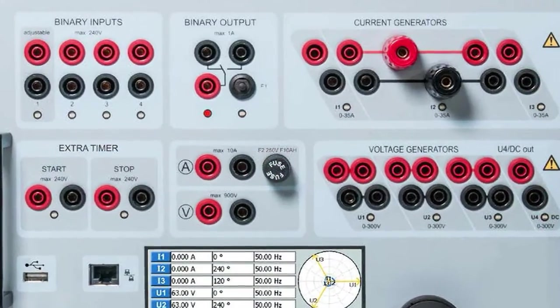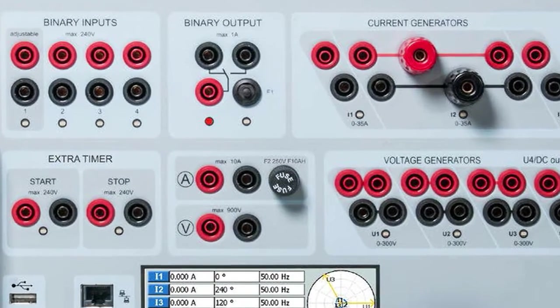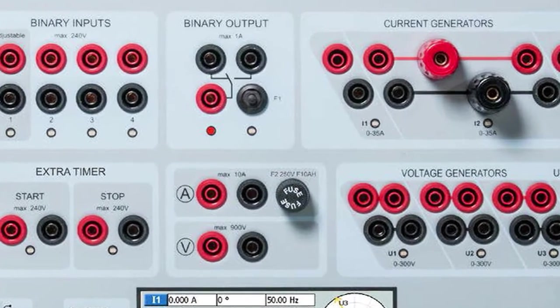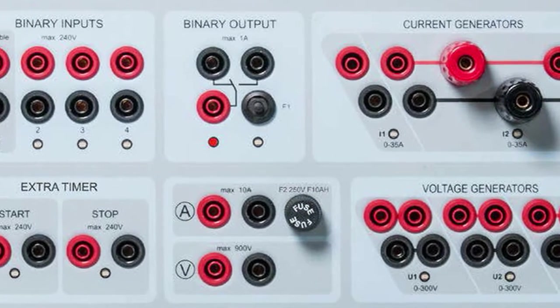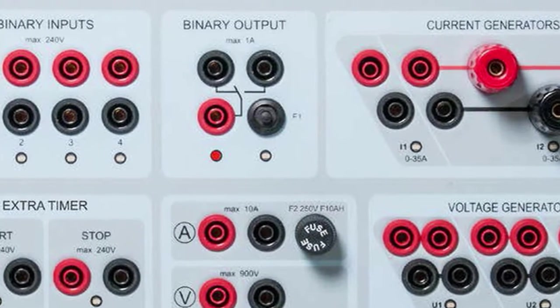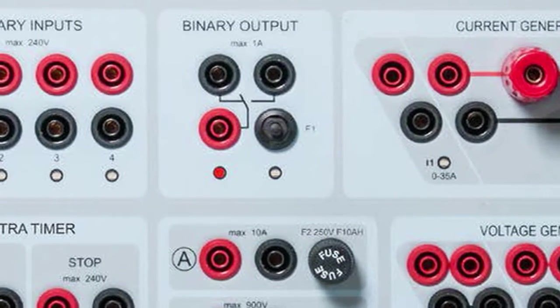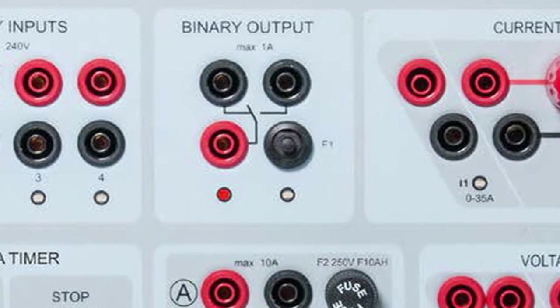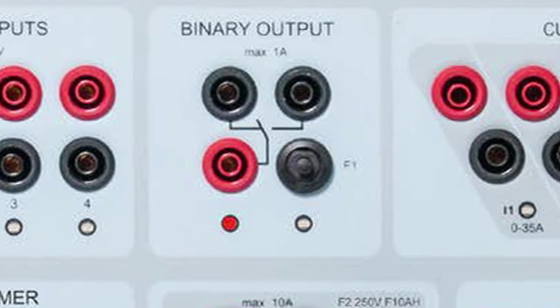The Sverker 900 also has binary output which can be used to simulate normally open or normally closed contacts for testing breaker failure schemes or similar power system operations. In addition, it may also be used to switch AC DC voltages and currents.